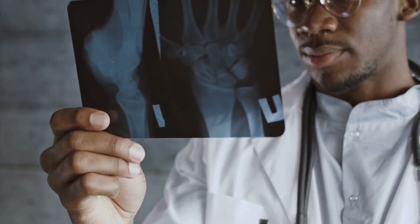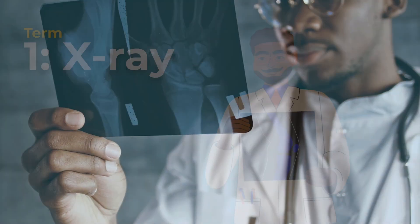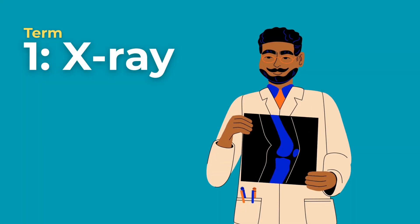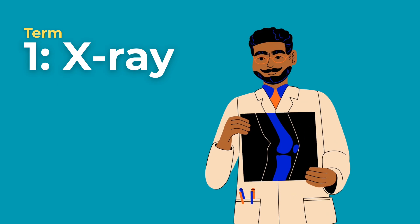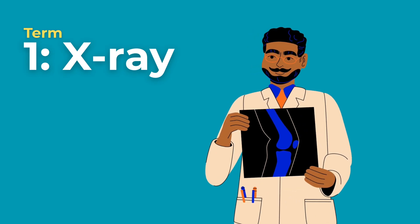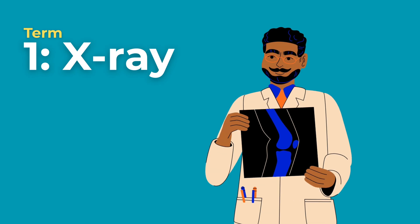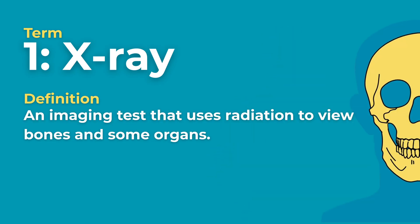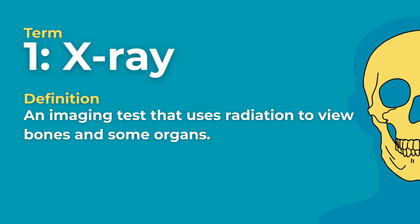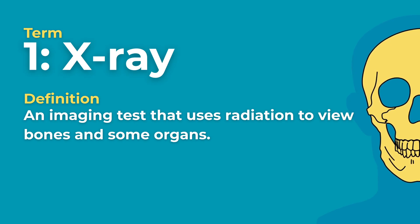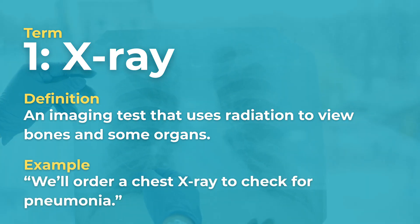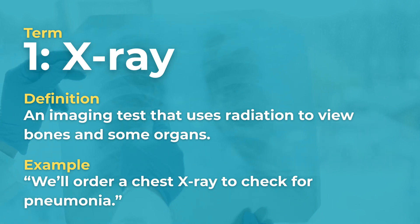Let's get started on our first term — X-ray. An X-ray is an imaging test that uses radiation to view bones and some organs. Example phrase: We'll order a chest X-ray to check for pneumonia.